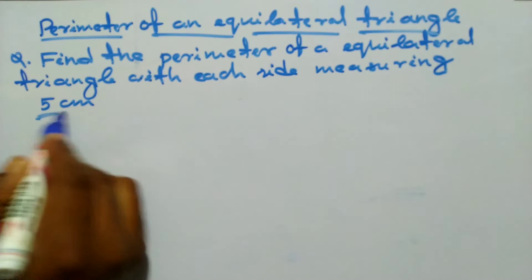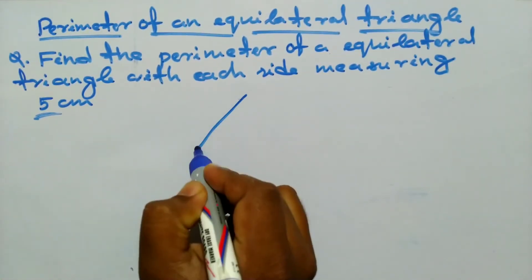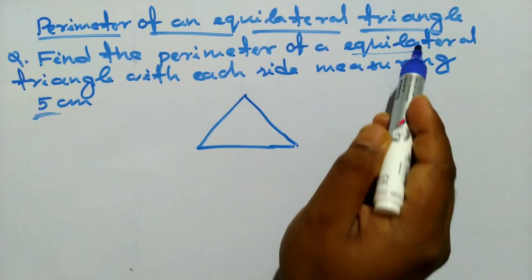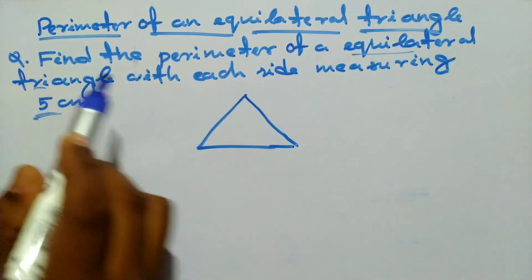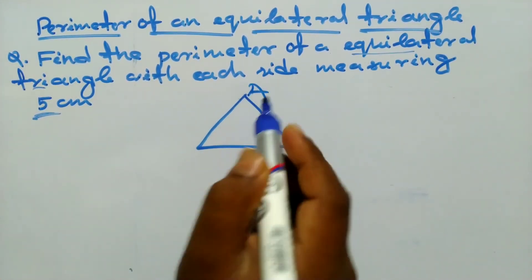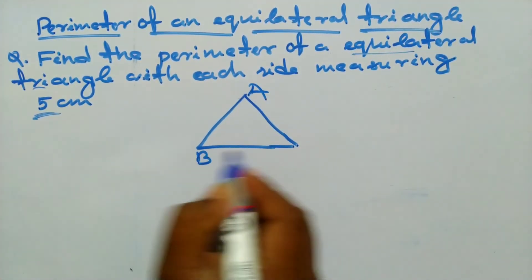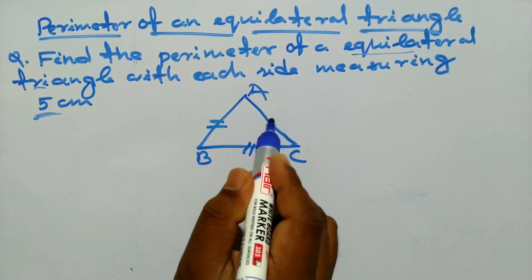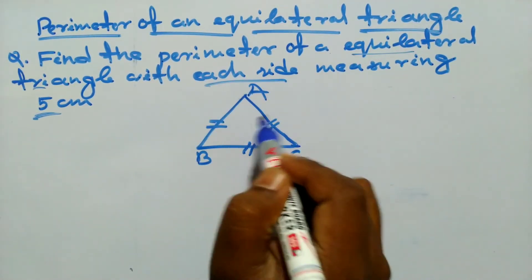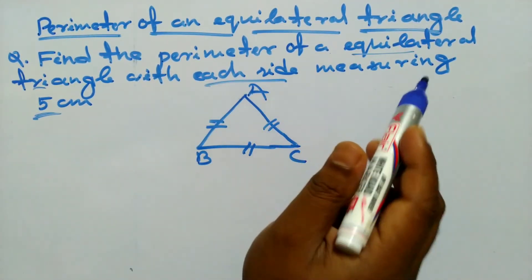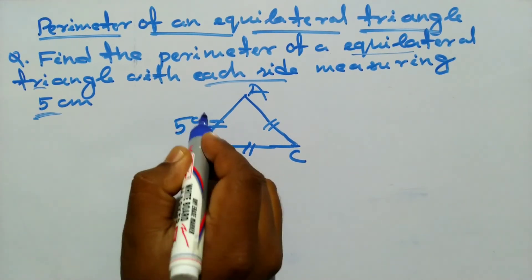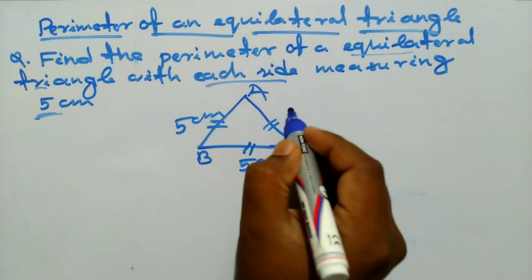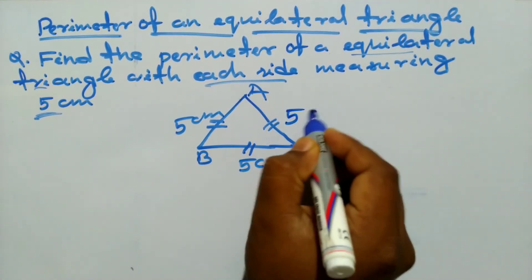First step: draw a triangle. This is an equilateral triangle, meaning all sides are equal. Name the triangle ABC. This means AB is equal to BC is equal to AC, and each side measures 5 centimeters — this length is 5 cm, this length is 5 cm, and this length is 5 cm.